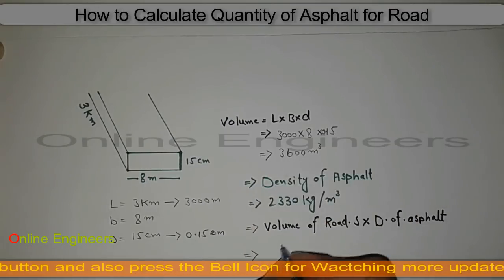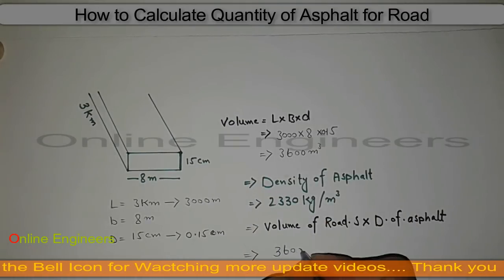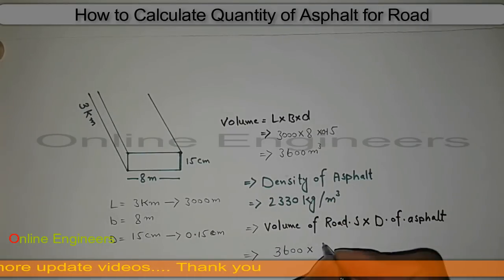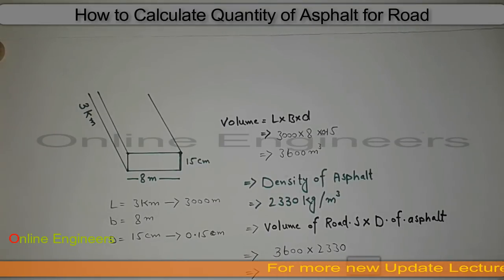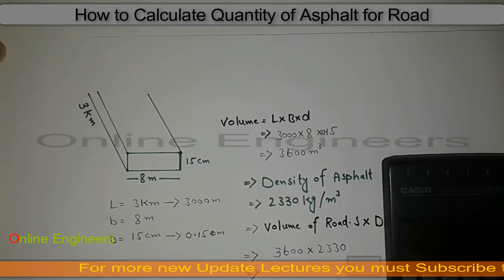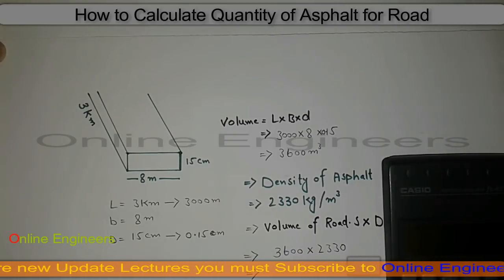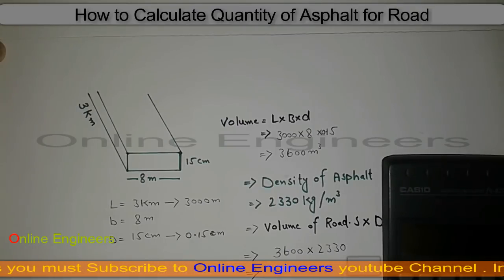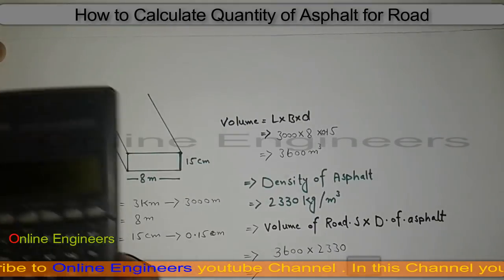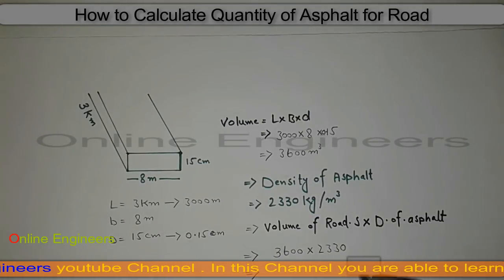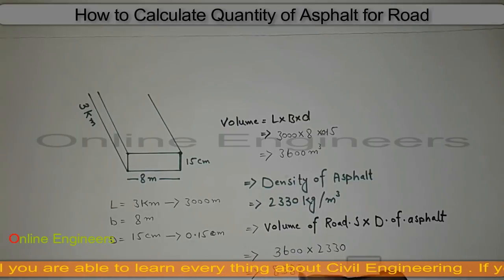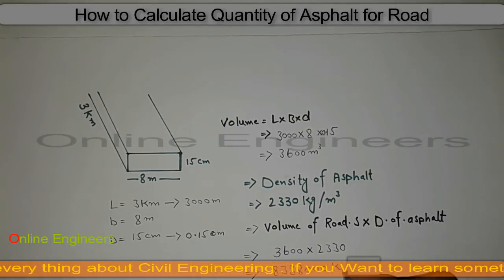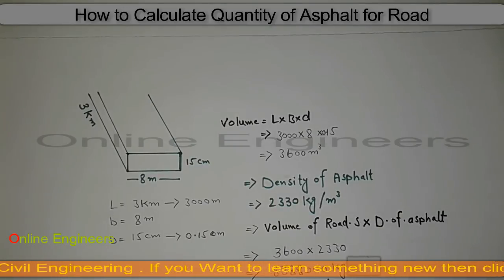So volume is 3600 multiplied by the density of asphalt, 2330. Calculating these values: 3600 × 2330 gives us 8,388,000 kg.